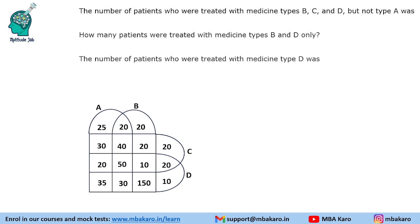The number of patients who were treated with types B, C and D but not type A. Looking at the region common to B, C and D but not A — the value is 10.